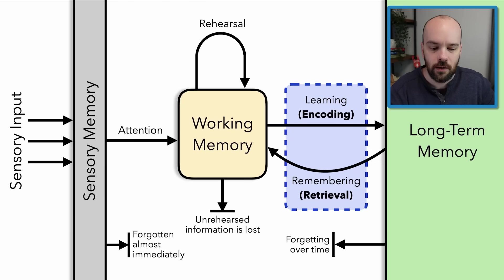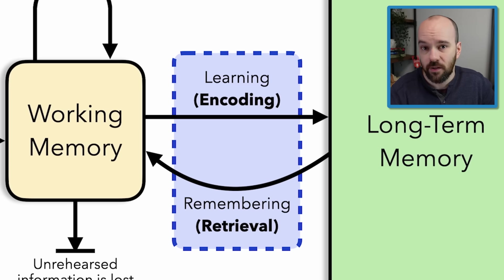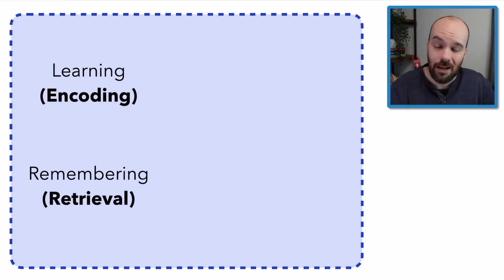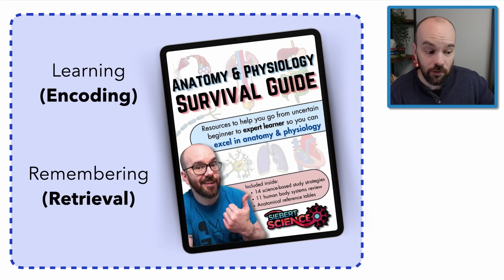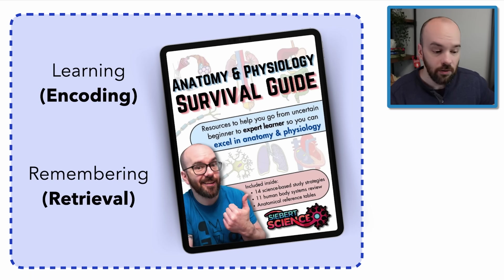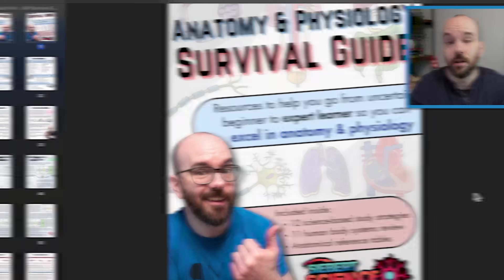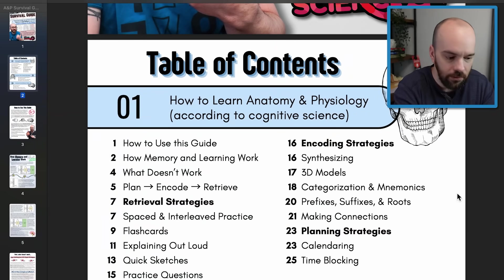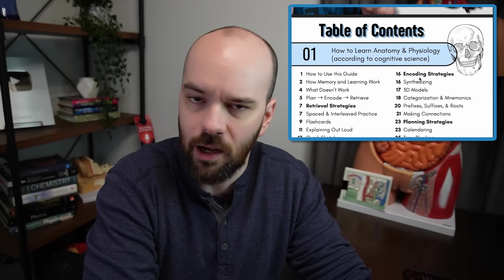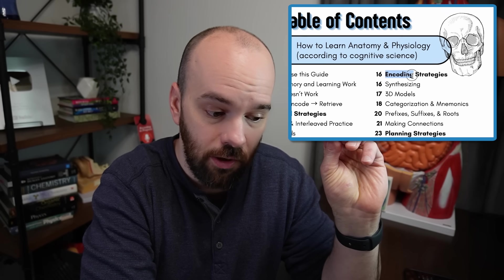Let's go back to the information processing model. I talked about encoding and retrieval — these are really where you can strengthen your learning and do well in your classes and exams. I've got a whole A&P survival guide with 12 different strategies: 10 of those are about encoding and retrieval, and a few are about planning out your sessions. I'm going to open that up and show you a couple strategies. If you want the guide, it's totally free — there'll be a link in the description and at the end of this video.